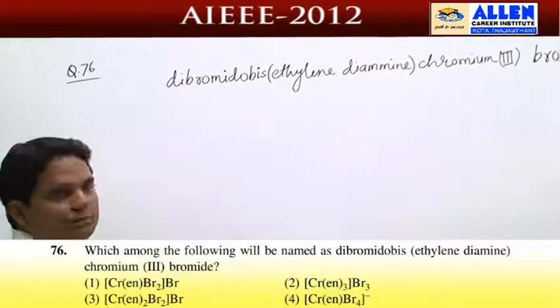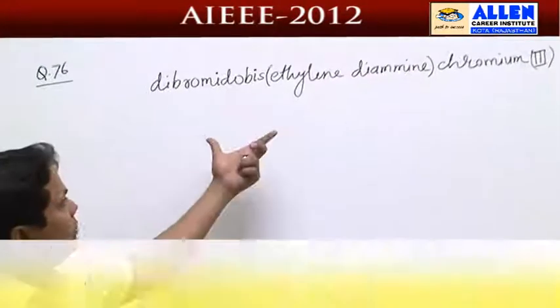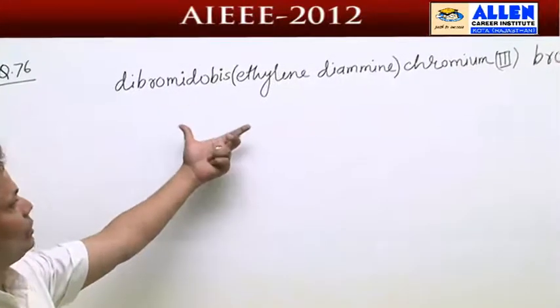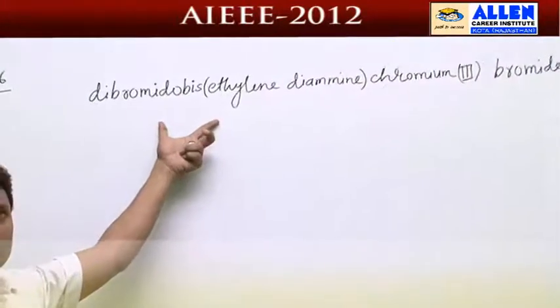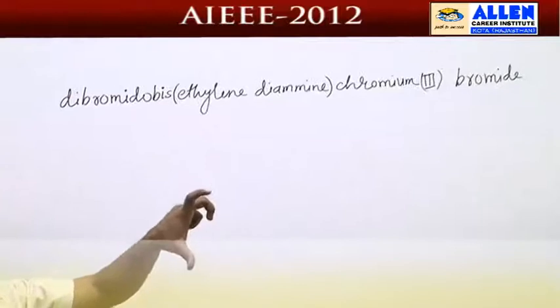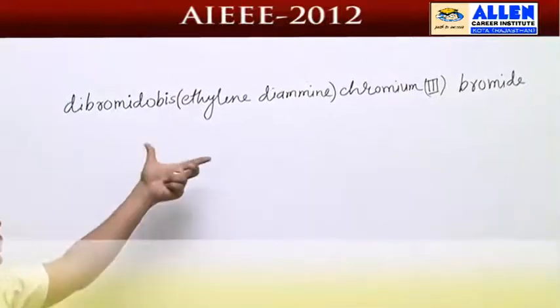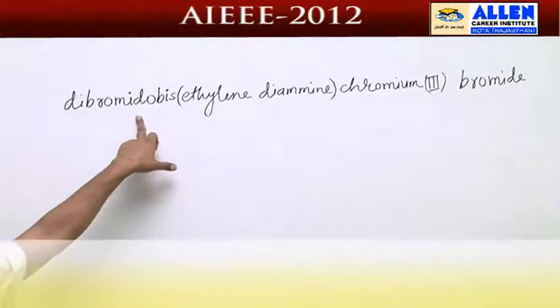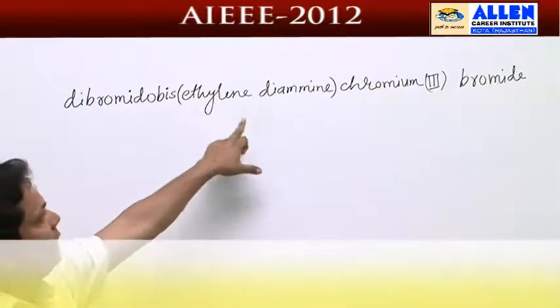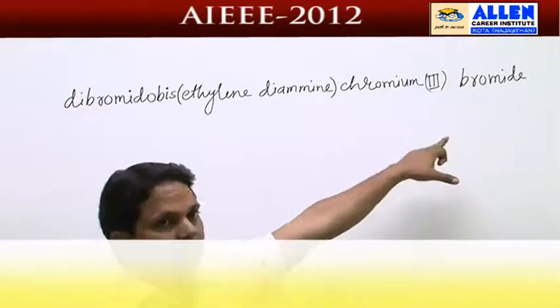Coordination chemistry. In this question, IUPAC name is given and in the four options structures are given. Question is dibromido bisethylene diamine chromium third bromide. This IUPAC name of which structure?